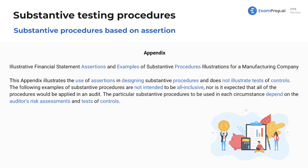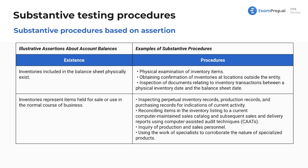Let's dive right in and see what procedures we're going to do for each assertion. This is for a made-up manufacturing company. We're going to see the assertions about the account balances first, and then we'll go to transaction level and then disclosures. Here's the example of what procedures you'd actually do.